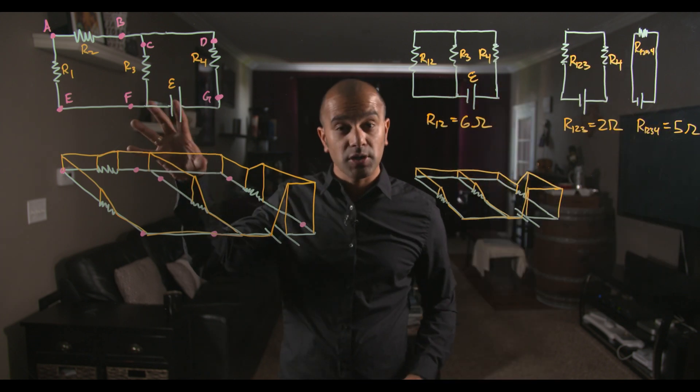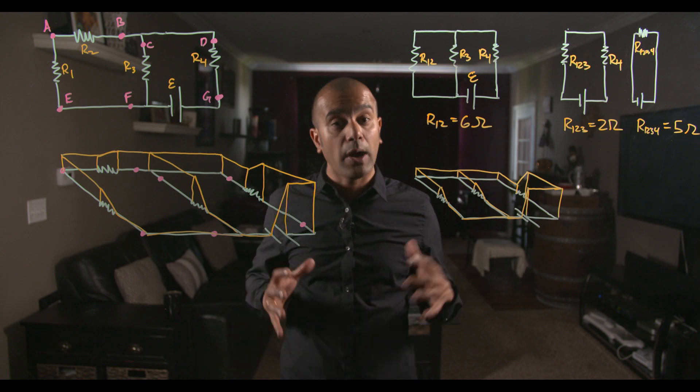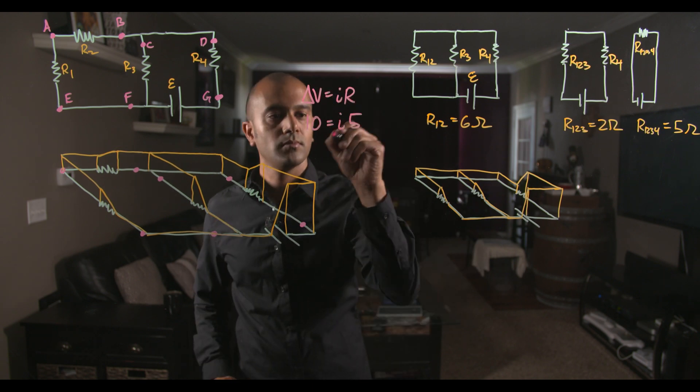The equivalent resistance of the full circuit is 5 ohms, from which we can now apply Ohm's law to find the current through the voltage source.